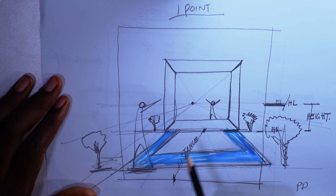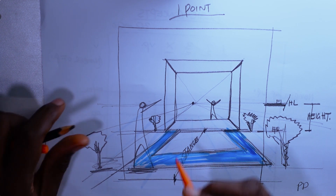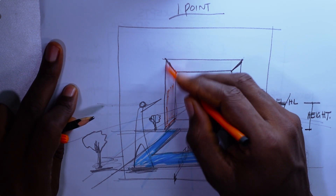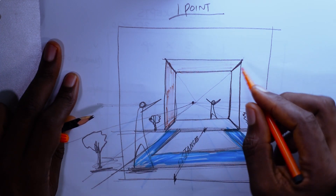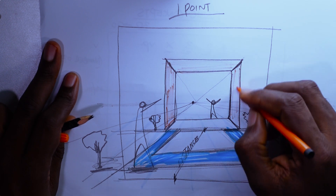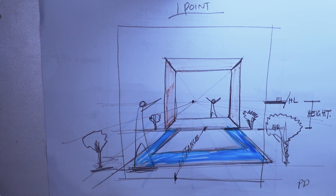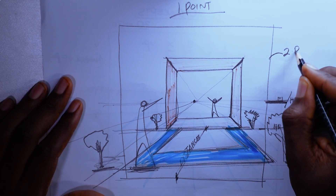This is the simplest form of perspective — one-point perspective. It is very useful if the object you are drawing is parallel to the picture plane, meaning the vertical and horizontal axis of the object are not placed at an angle to the picture plane. If they are placed at an angle to the picture plane, what you would need to do is to move over to two-point perspective.